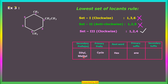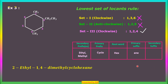With the correct numbering established, the name of this cycloalkane is 2-ethyl-1,4-dimethylcyclohexane. The root word is 'hex', primary suffix is 'ane', primary prefix is 'cyclo', and substituents are written in alphabetical order — ethyl first, then dimethyl.